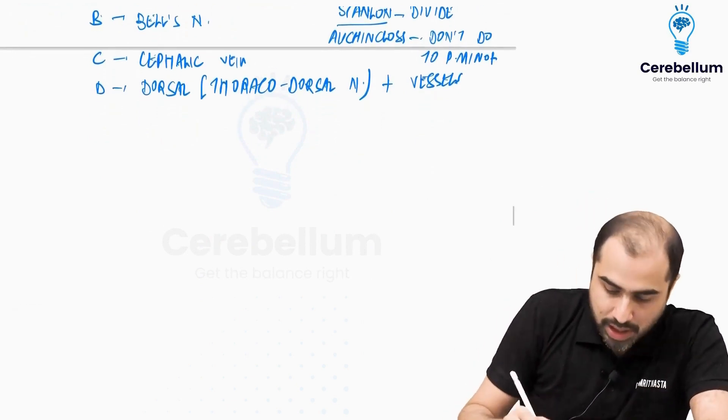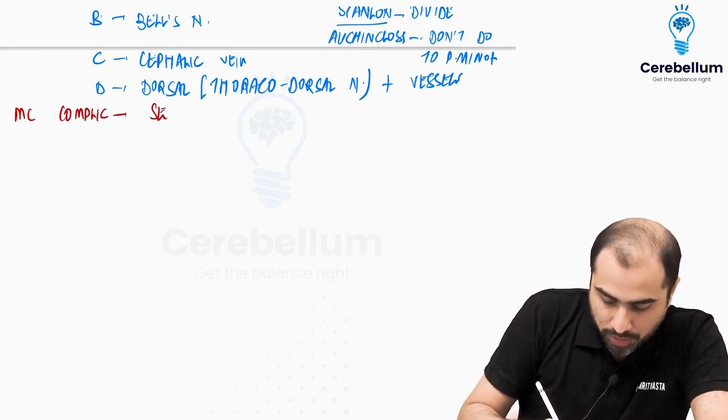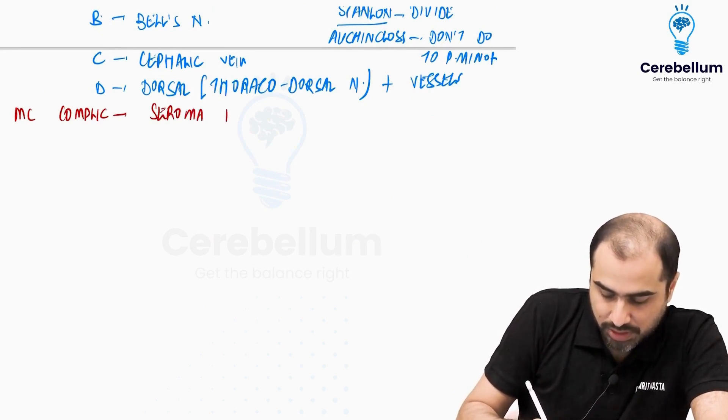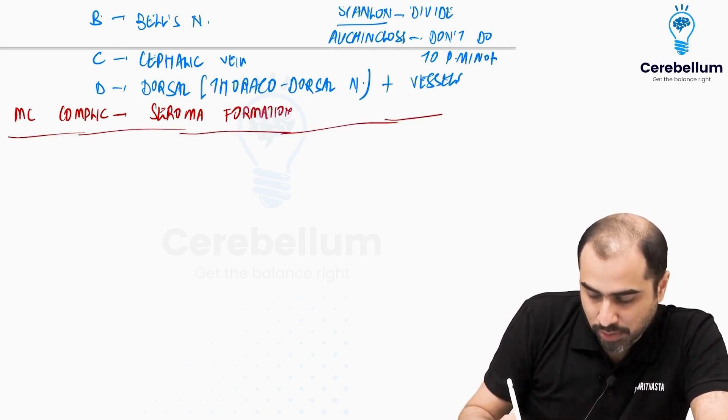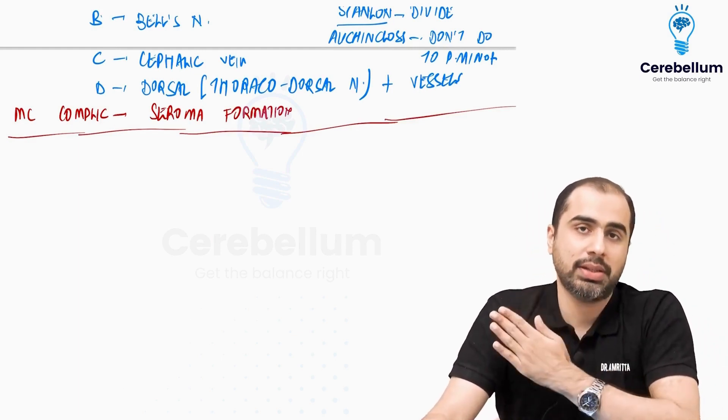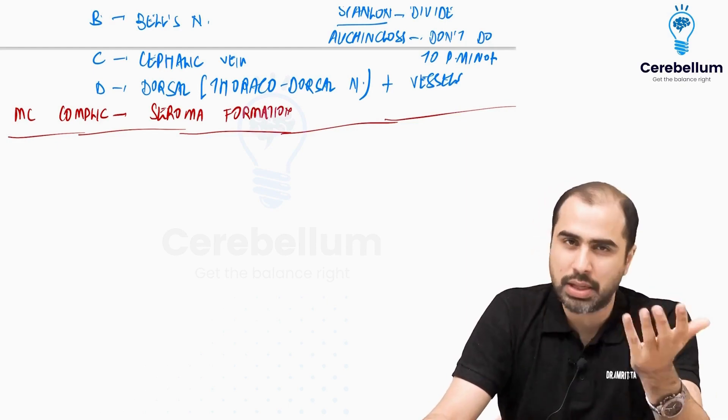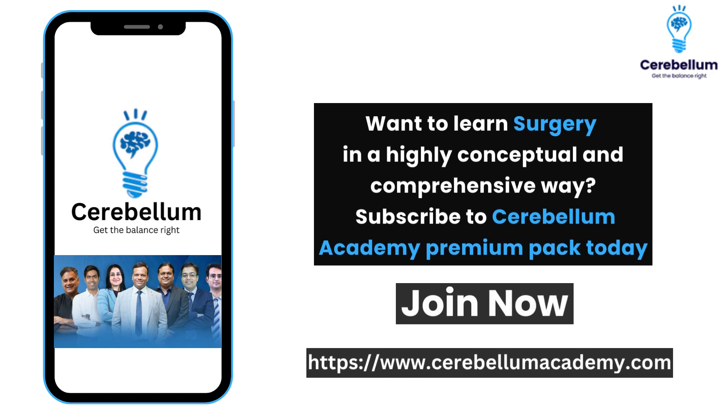And sometimes they ask you the most common complication of MRM. And the answer is going to be seroma formation. It is seen in almost 50% patients. Seroma formation. Since you are dividing so much of lymphatics, there can be a fluid collection in the post-operative period that is called seroma in the breast cavity because now there is no breast, there is just skin. You can get a fluid collection that is called seroma. It is the most common complication.